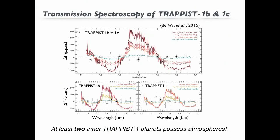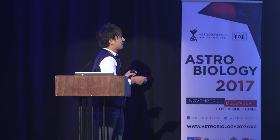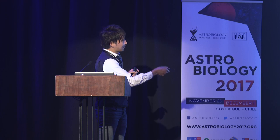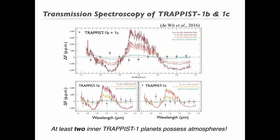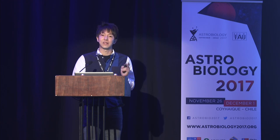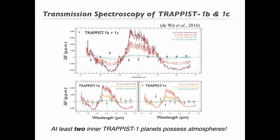We are sure TRAPPIST-1 B and C have an atmosphere, because transmission spectra of the planets' atmospheres have been observed by HST's Wide Field Camera. We can see that both planets have a flat absorption feature at near-infrared wavelengths. However, what kind of atmosphere they have is not clear, because there are still two possible solutions: one is a hydrogen-dominated atmosphere with thick clouds and haze located at pressures larger than 10 millibars; the other is a volatile-rich atmosphere, like water vapor. That's why, in this talk, we have investigated whether TRAPPIST-1 planets can have a hydrogen-rich atmosphere in the context of planet formation.